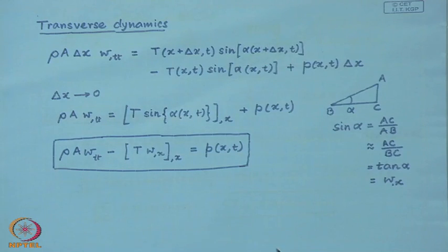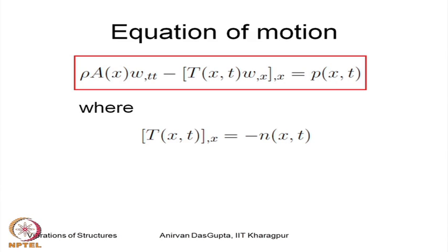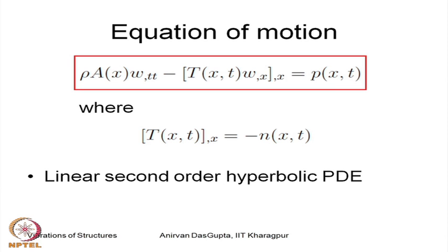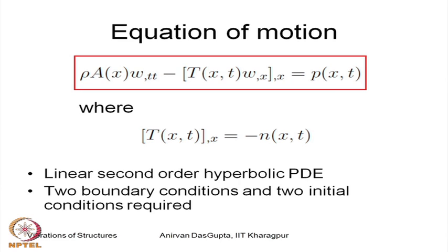Finally, putting together the two equations derived: the boxed equation is the equation of transverse dynamics, where the tension may be a function of space and time, and there may be an external distributed force n. This equation of motion is a partial differential equation — specifically, a linear second-order hyperbolic partial differential equation. To solve this, we need boundary conditions and initial conditions. Since the equation is second-order in space and second-order in time, we need two boundary conditions and two initial conditions.